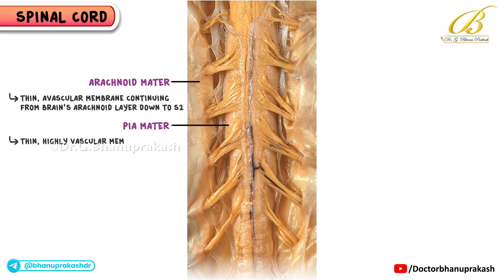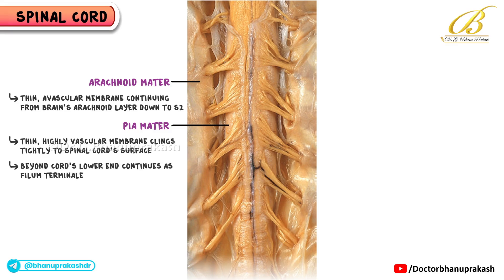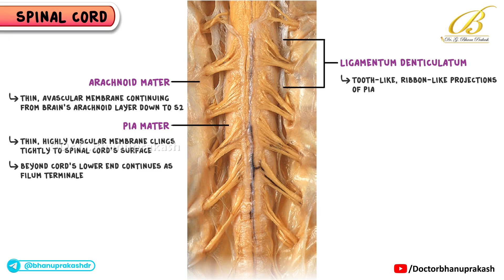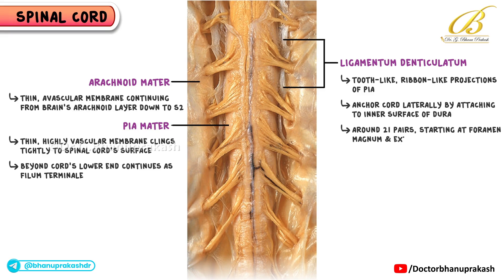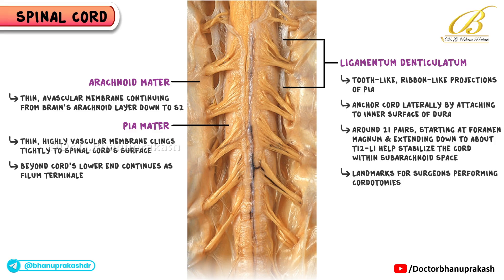Pia mater is a thin, highly vascular membrane that clings tightly to the spinal cord surface. Beyond the cord's lower end, it continues as the filum terminale. We also have special pia mater processes called the ligamentum denticulatum, or denticulate ligament. These are tooth-like, ribbon-like projections of pia that anchor the cord laterally by attaching to the inner surface of the dura. There are around 21 such pairs, starting at the foramen magnum and extending down to about T12 to L1. They help stabilize the cord within the subarachnoid space and are landmarks for surgeons performing cordotomies.